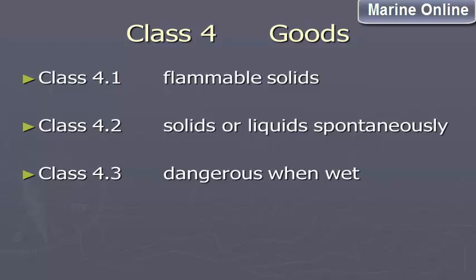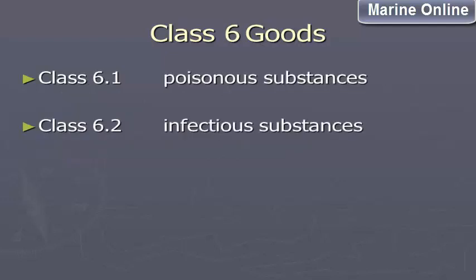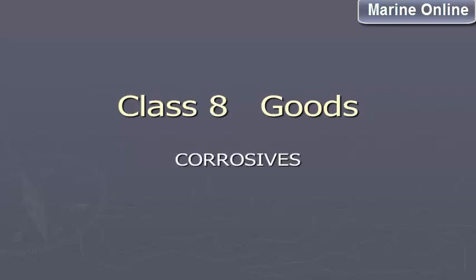Class 4.2: Solids or Liquids Liable to Spontaneous Combustion. Class 4.3: Dangerous When Wet. Class 5 — Goods. Class 5.1: Oxidizing Agents/Oxidizing Substances. Class 5.2: Organic Peroxides. Class 6 — Goods. Class 6.1: Poisonous Substances. Class 6.2: Infectious Substances. Class 7: Radioactive Materials. Class 8: Corrosives. Class 9: Miscellaneous.